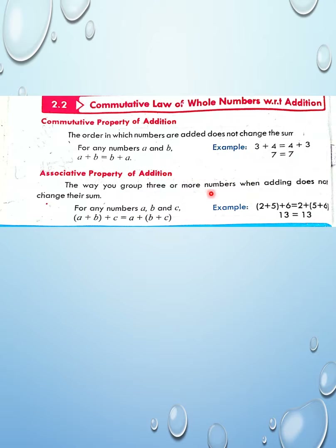The associative property: when you have three numbers and you group them, you add those three numbers in groups. If you have A, B, C — you can group A and B and add with C, or group B and C and add with A. The answers will be the same. So here A plus B is in the bracket.